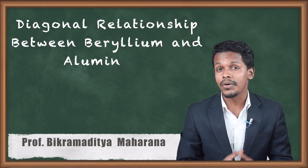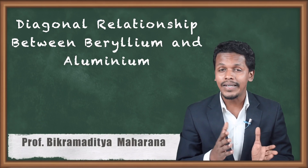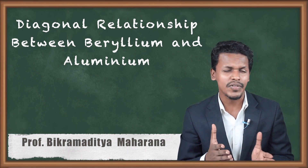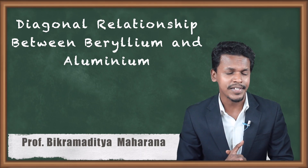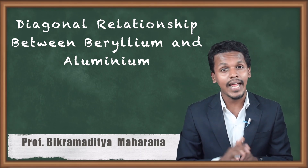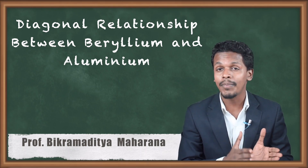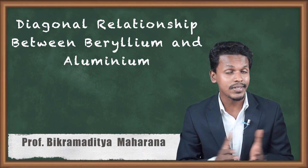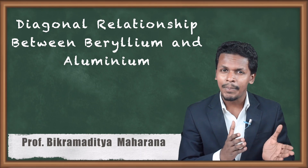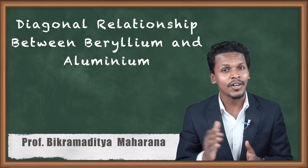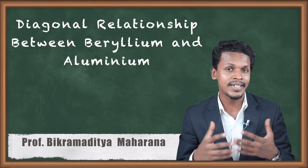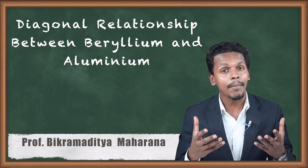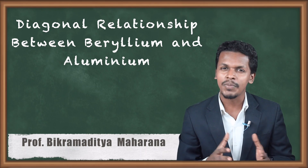Hello friends. In the previous lecture we discussed how beryllium behaves differently from other elements, and the different uses of the alkaline earth metals. Now we are going to talk about the diagonal relationship between beryllium and aluminium — how they are related to each other even though beryllium belongs to the s-block while aluminium belongs to the p-block. Despite being in two different groups or blocks in the periodic table, they share similar properties.